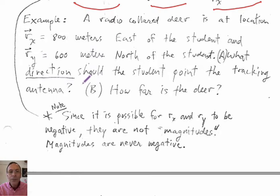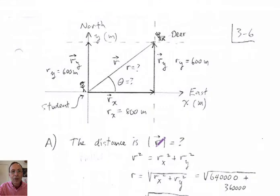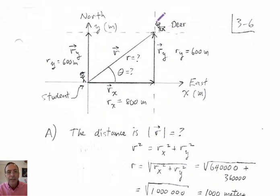And the question is, what direction should the student point his tracking antenna to get the strongest signal? And so that's A. And B, how far away is the deer? Okay. So here's a diagram of the problem. The student is here. The deer is over here. And this is the east direction. This is the north direction. And I've drawn the x component of the position vector. So here's the y component of the position vector. And here's the y component of the position vector.